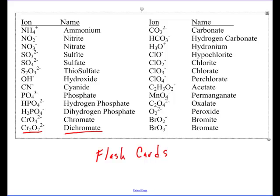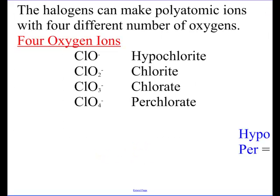On to our next thing, because it gets even a little more confusing. Halogens, my favorite chemical family, make oxyanions with 4 different oxygens. So, for example, here's one with 1 oxygen, 2 oxygens, 3 oxygens, 4 oxygens.